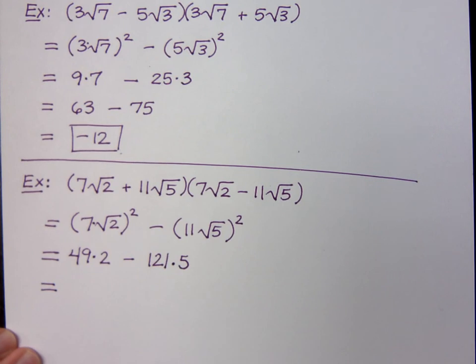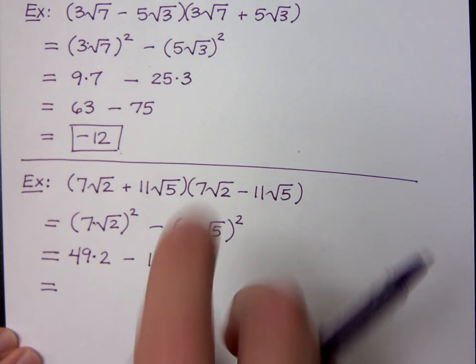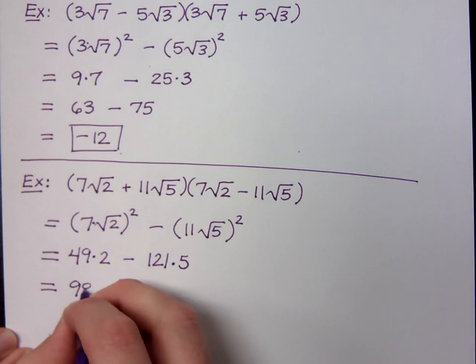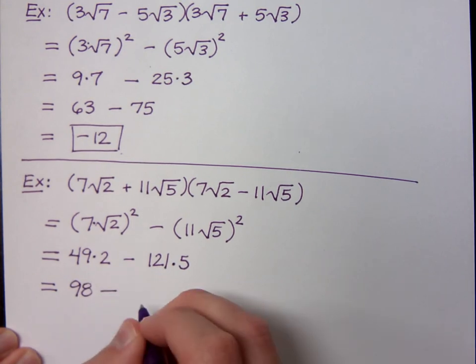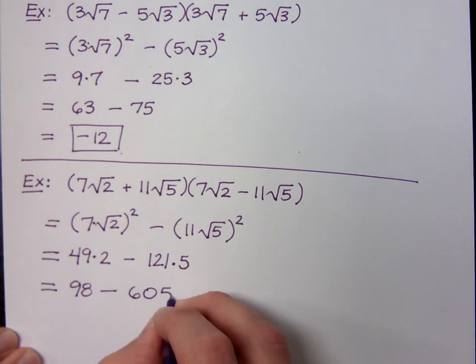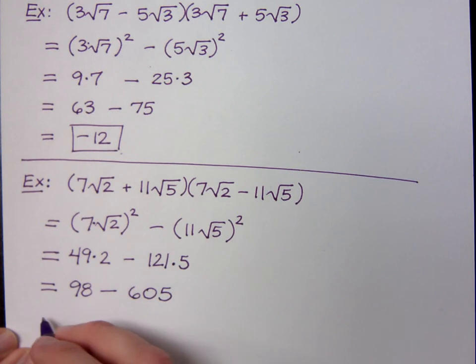What's forty-nine times two? I don't know, let me press the buttons on my calculator. Ninety-eight. Ninety-eight. Minus que? Six hundred five. Six hundred five, do you all agree? And then ninety-eight minus six hundred five. Negative five hundred seven. Negative five hundred seven, do you all agree?